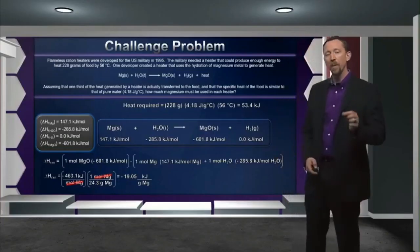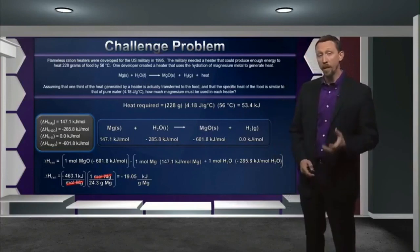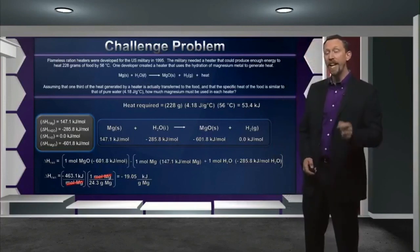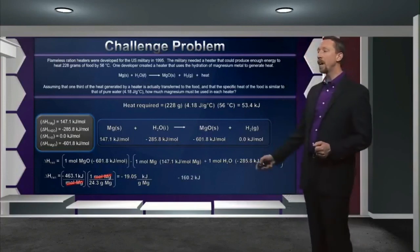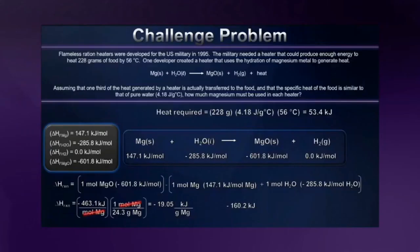Remembering that only one-third of the heat generated will be absorbed by the food, we need a heater that emits 160.2 kilojoules of heat. We've determined that this reaction releases 19.05 kJ per gram of magnesium metal used. In the final analysis, we're going to have to use 8.4 grams of magnesium metal — that's about a third of an ounce, or roughly the weight of two nickels. Well worth carrying in your pocket if it means a hot meal in the field.